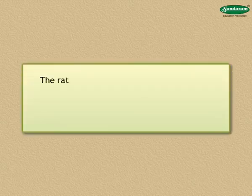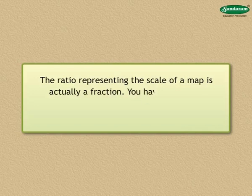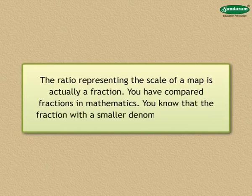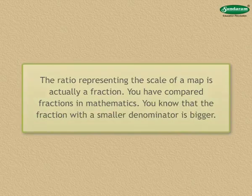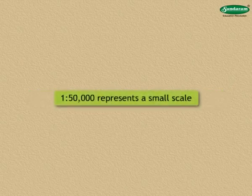The ratio representing the scale of a map is actually a fraction. You have compared fractions in mathematics. You know that the fraction with a smaller denominator is bigger. Therefore, note that the fraction 1 is to 10,000 represents a large scale and 1 is to 50,000 represents a small scale.